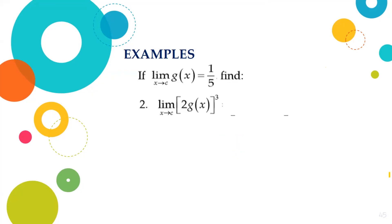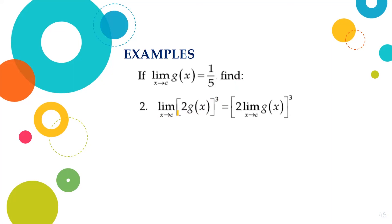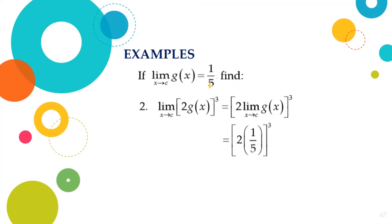Let us have another example. If the limit of g of x as x approaches c is equal to 1 fifth, find the limit of 2 times g of x quantity cubed as x approaches c. Applying Theorem 2 and Theorem 6, we will have 2 times the limit of g of x as x approaches c, which equals 1 fifth. Substituting, we will have 2 times 1 fifth quantity cubed. So, the final answer is 8 over 125.